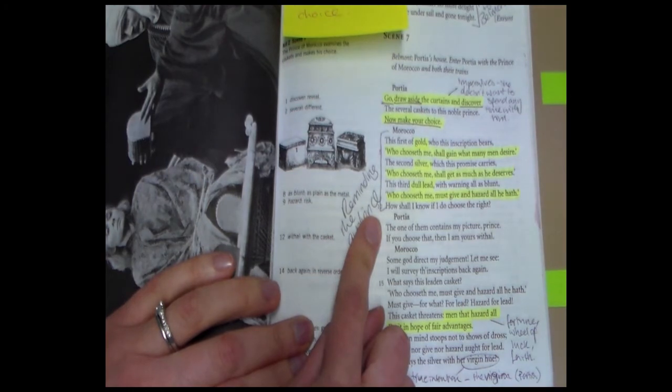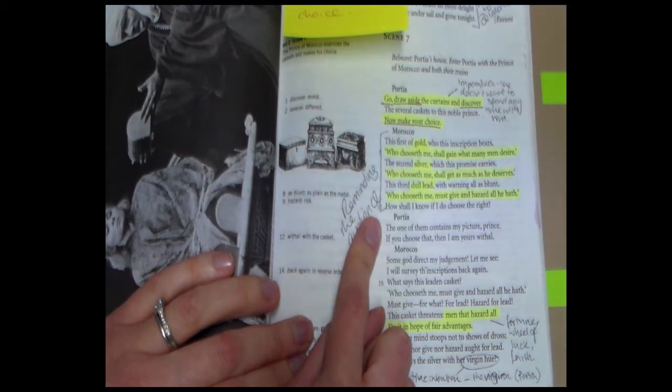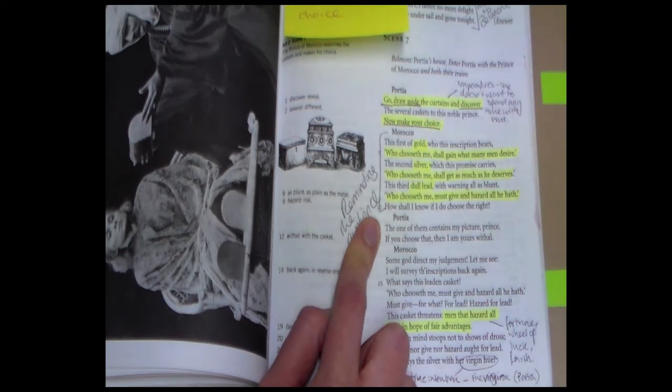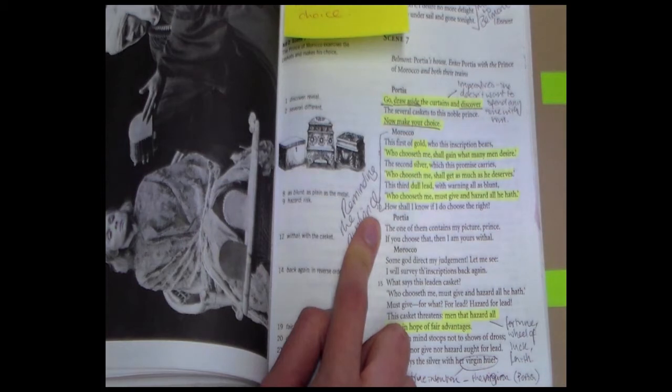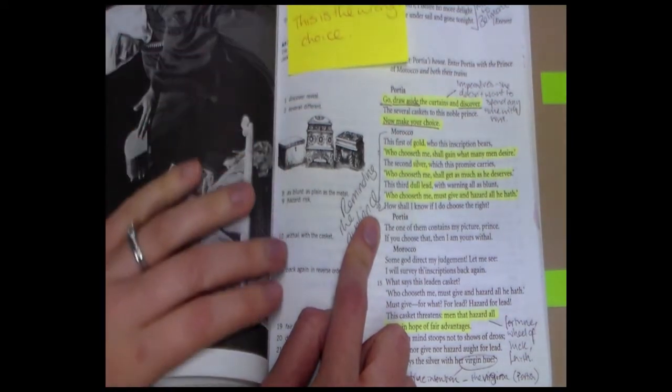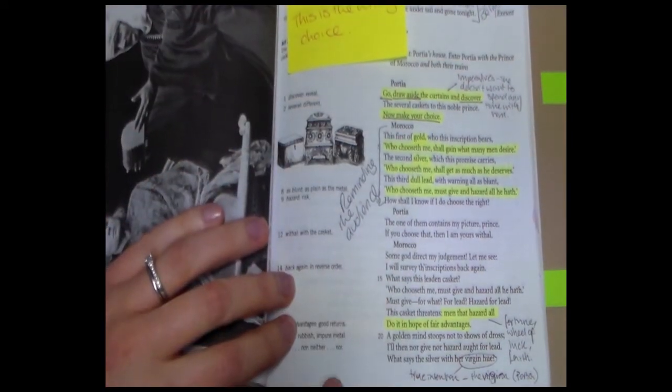Now we've been reading this quite carefully so we will remember that this is a father who is putting together a choice for the right husband, a moral man, to be able to choose his daughter. So it might seem quite clear to us as a modern audience reading this very slowly which casket is going to be the correct one. That's not going to be quite as clear to the Prince of Morocco so we're going to have a look at his decision.